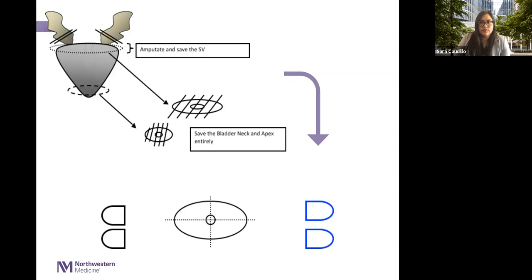We dissected the seminal vesicles and fixed the prostate in formalin, then sectioned them into four-millimeter cuts, stained them with histochemical agents, and examined them under the microscope. We also collected other data points including patient age, family and medical history, and variables that would help establish prostate cancer diagnoses.